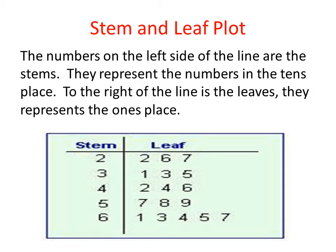In this stem and leaf plot, our stems are 2, 3, 4, 5, and 6 — meaning our numbers go from the 20s through the 60s. For example, where the stem 5 is located, the 7 to the right of the line represents 57. The last number on the leaf side to the right of 5 is 9, and that would represent 59.